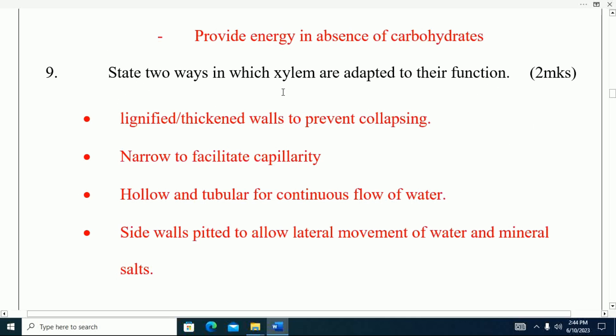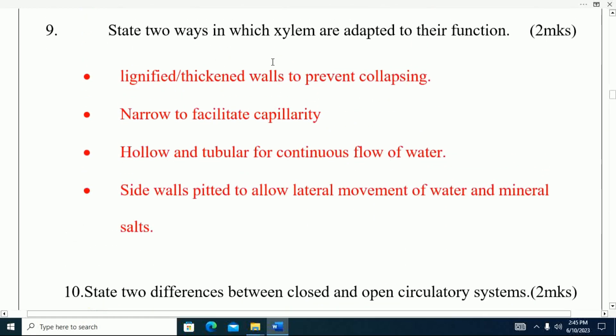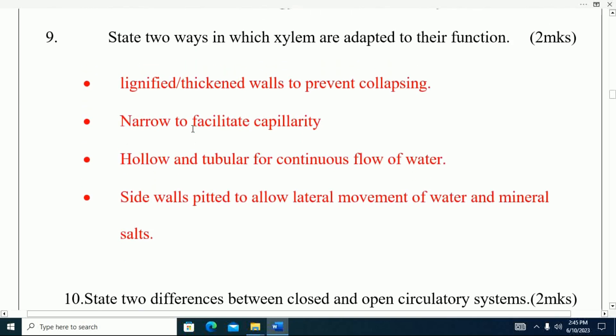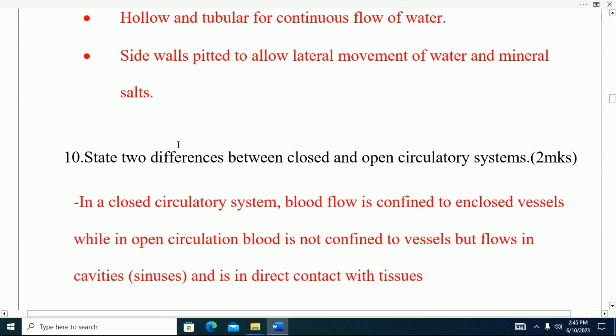Question number nine: State two ways in which xylem are adapted to their function. The work of xylem is to transport water from the soil to all parts of the plants. Number one: they are lignified, that is to say they have thickened walls to prevent collapsing. Number two: they are narrow to facilitate capillarity. Number three: they are hollow and tubular for continuous flow of water. Number four: pitted walls to allow lateral movement of water and mineral salts.